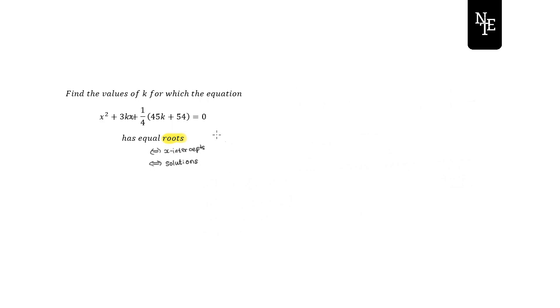What we have here is a general form of a quadratic. How does this quadratic differ from others we've seen, like x squared plus 2x plus 1? The difference is that in the given expression, our b and c values are given by equations, whereas in a standard quadratic, a, b, and c are just constants.